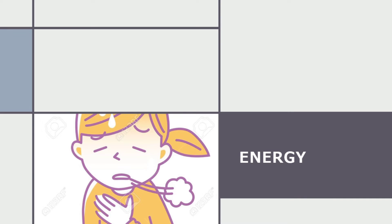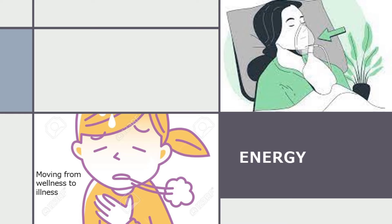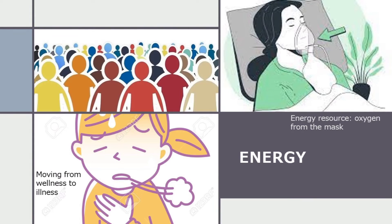There should be a state of equilibrium in the basic structure. For example, if someone is having respiratory distress, that is their stress and they are moving from wellness to illness. If an oxygen delivery unit is at their bedside, they can use it — that is their energy resource, and the stressor slowly goes away. People without respiratory problems have enough oxygen within their body, meaning their internal energy resources are sufficient to handle breathing difficulty.